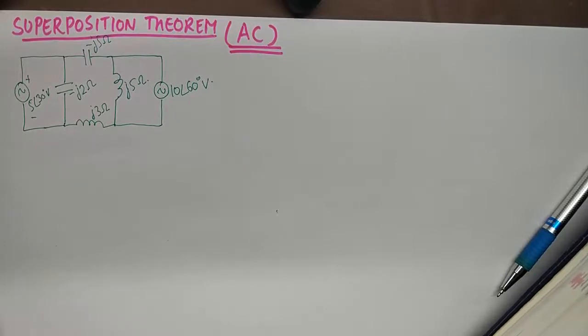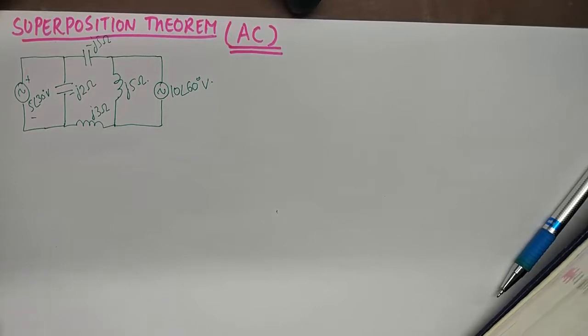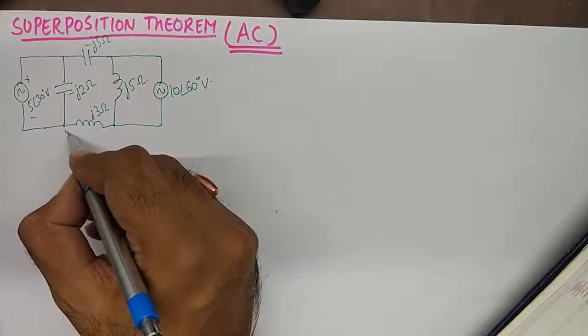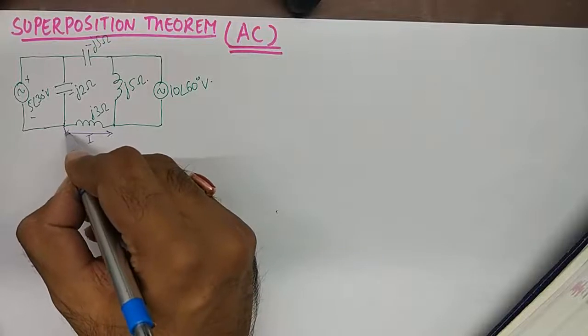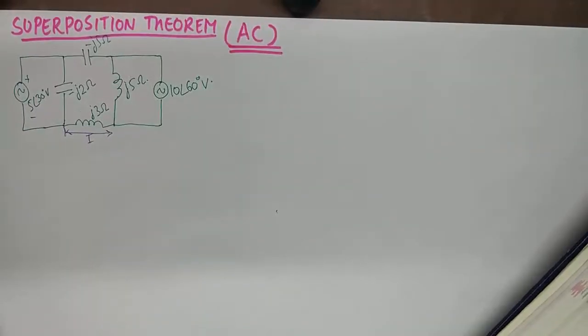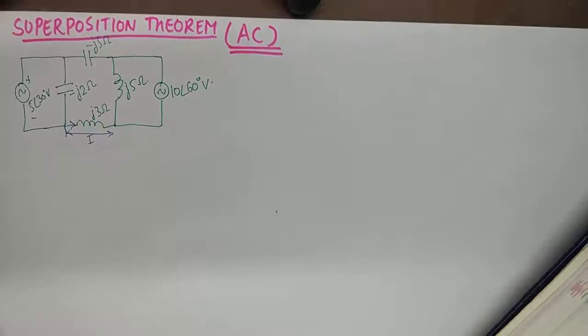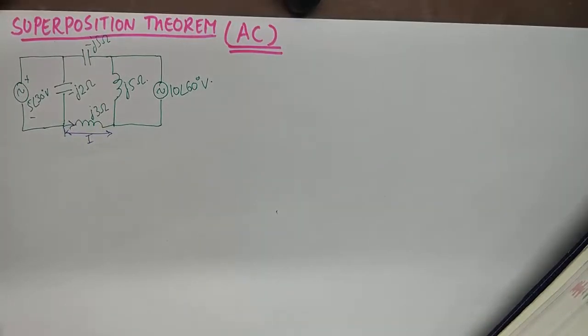And I've got this question where I've been asked to find the current through J3 Ohm inductive reactance. And that would be this branch. So I'll need to find current in this branch. I do not know the probable direction of the current in this branch. But let us say it is going in this direction.